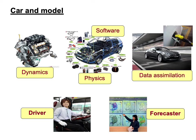We can compare a numerical model to a car. The dynamic core is regarded as the engine. Physics modules are components linked to the engine. Software is the frame of the car. Data assimilation is the gas or road that makes the car move. The driver is the decision-maker to reach the final destination, just as the forecaster makes the daily forecast. As numerical model performance gets higher and higher, the role of the forecaster becomes more limited — just as with advanced autonomous cars in coming years, the driver's role could be less important.